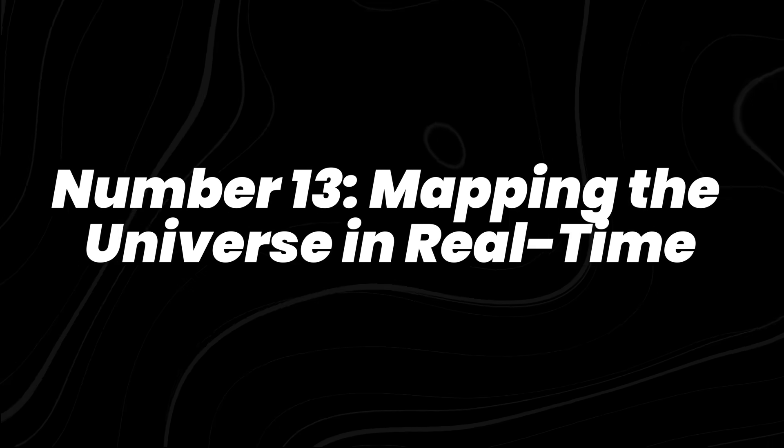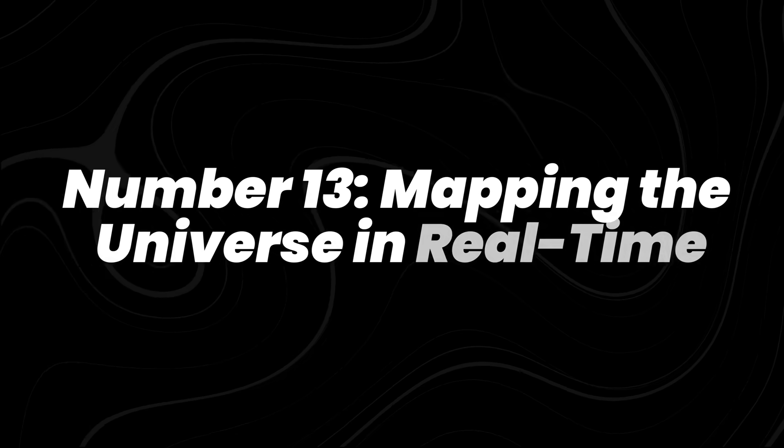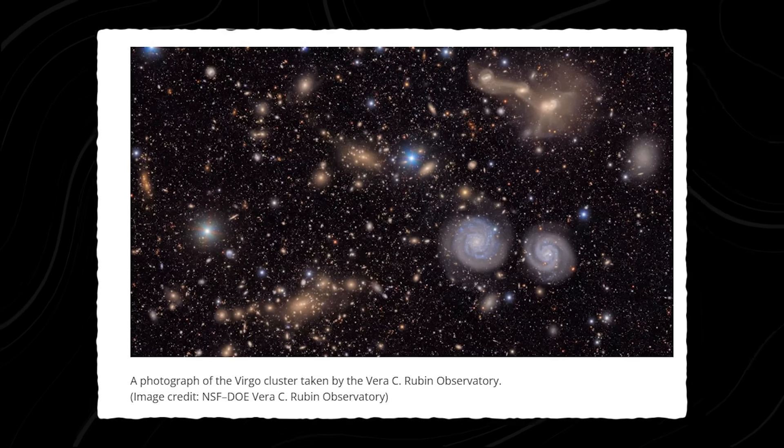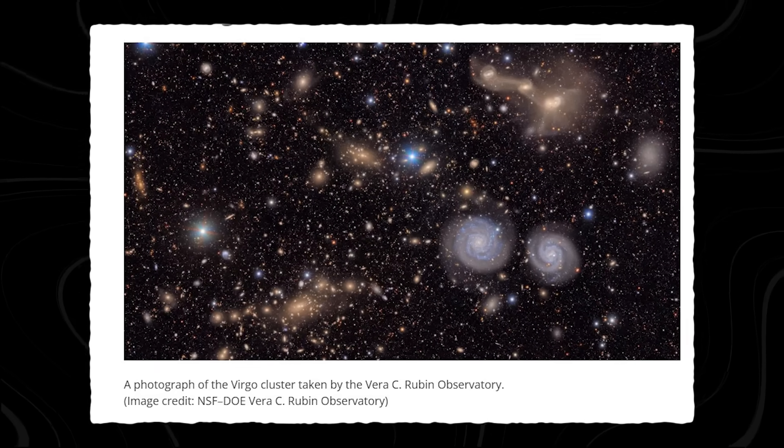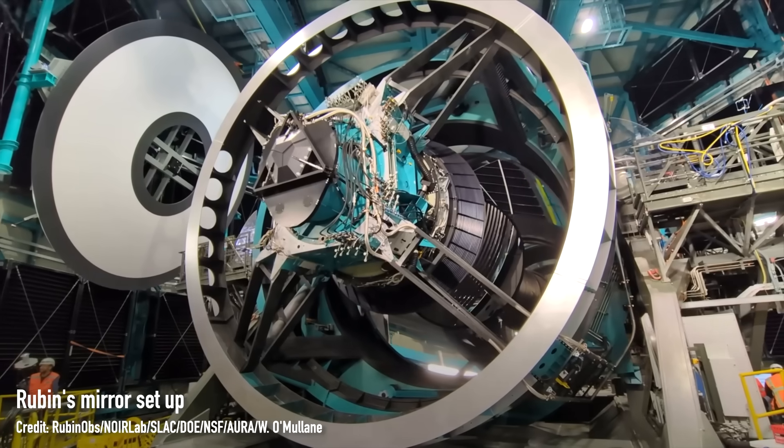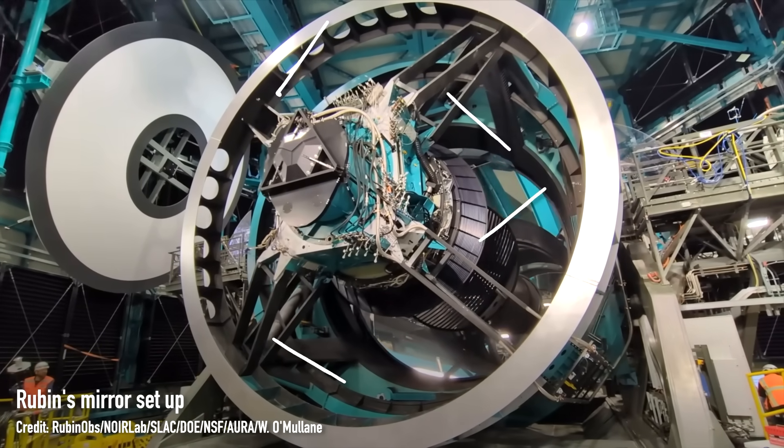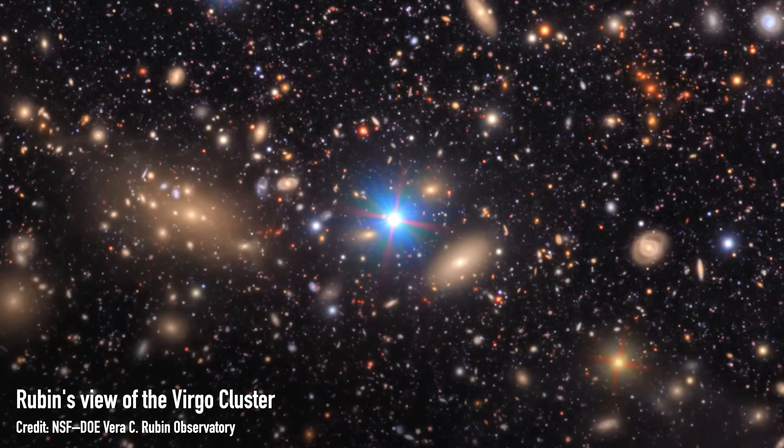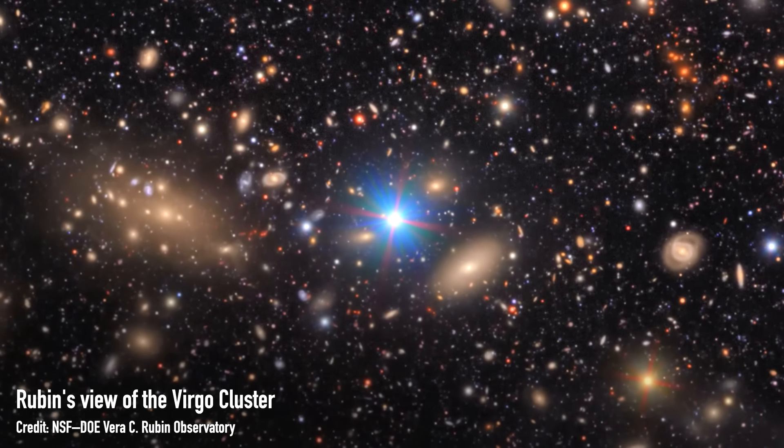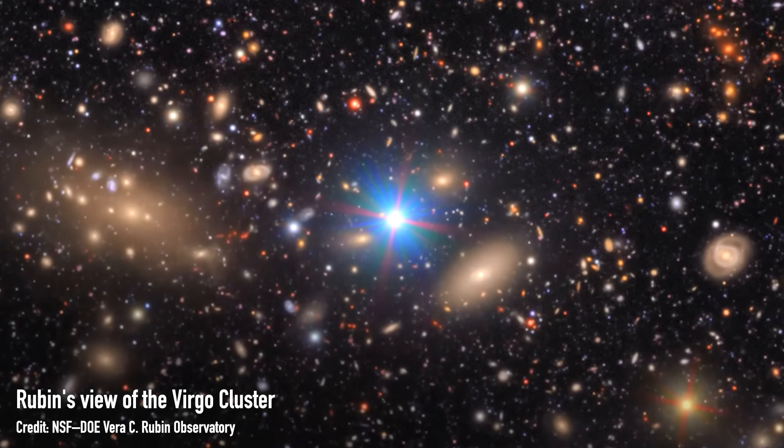Number 13, mapping the universe in real time. In June 2025, Vera C. Rubin Observatory captured its first ultra deep images using the world's largest digital camera, 3.2 gigapixels. In its first 10 hours, it identified over 2,100 previously unknown asteroids.